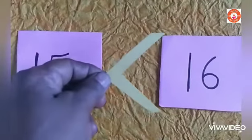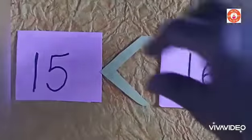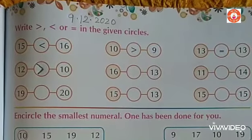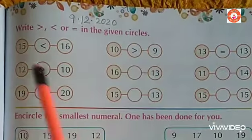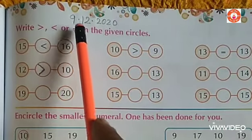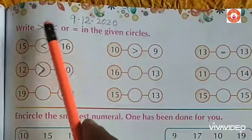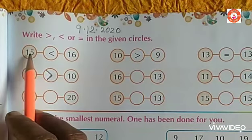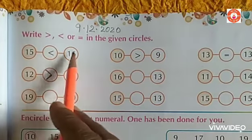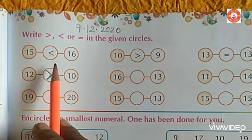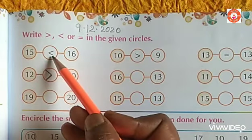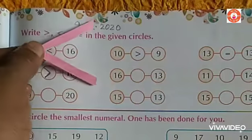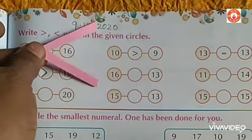Okay children, take out your math textbook, page number 45. Write today's date: 9/12/2020. Write greater, lesser, or equal in the given circles. They are given three symbols: greater, lesser, equal. First one — number 15 and 16. Which is greater? 16 is greater. So the crocodile will open his mouth towards 16.